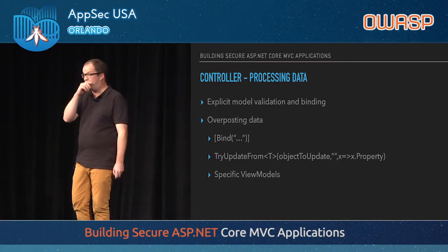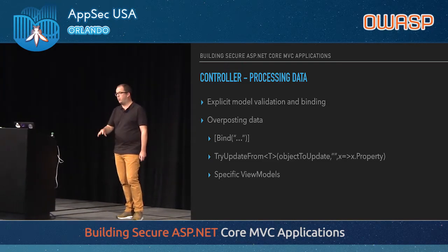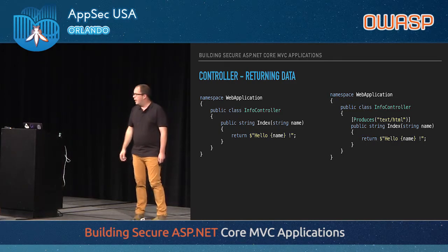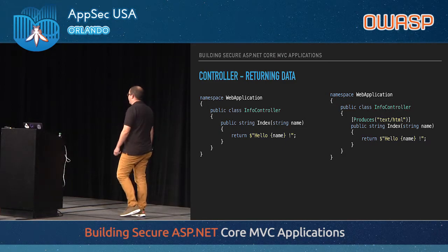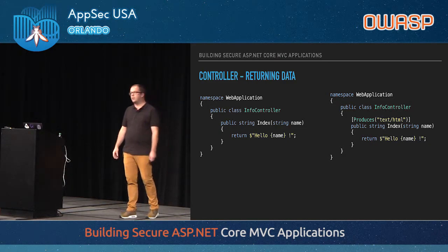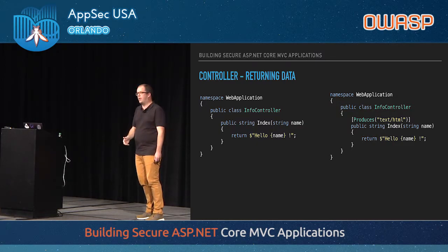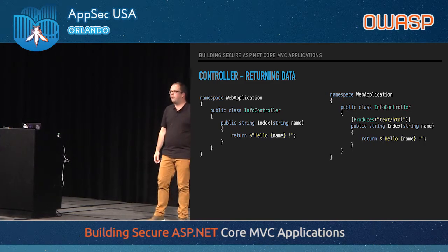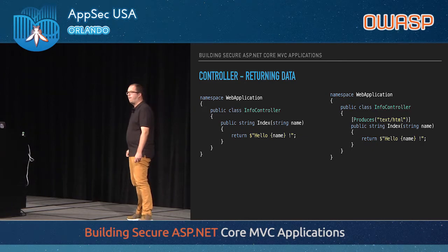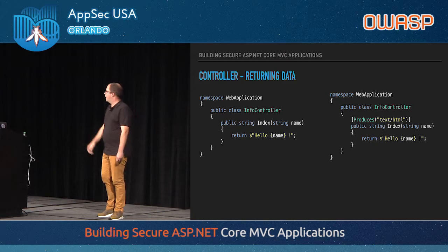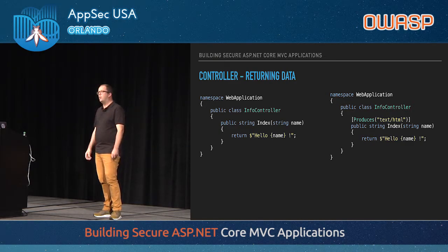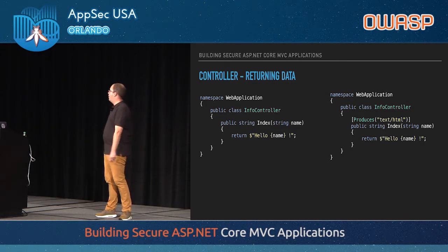Now let's talk about presenting data. If you see a controller that reflects an argument back in the response — a typical reflective cross-site scripting scenario — is it an issue? In regular MVC world, yes. In MVC Core, it's not an issue by default, because the default content type will be text/plain, not text/HTML. In MVC, it always defaults to text/HTML. If you want HTML returned, you need to annotate with the Produces attribute to set content type to text/HTML — which then introduces an XSS flaw.